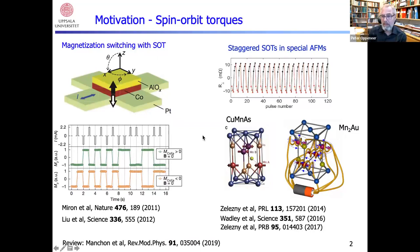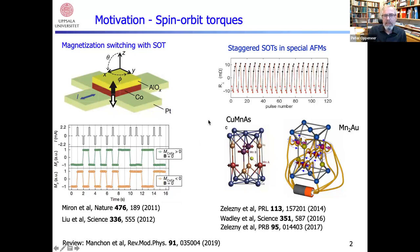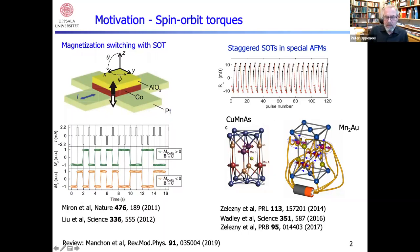The motivation for this work is spin orbit torques. More than 10 years ago it was shown that you can switch magnetization with spin orbit torques in a cobalt-platinum bilayer system just using currents. You get a very nice switching due to spin orbit torques, as was shown in these two seminal papers. It was also shown that you can have staggered spin orbit torques in special antiferromagnets such as copper manganese arsenide or manganese two gold.